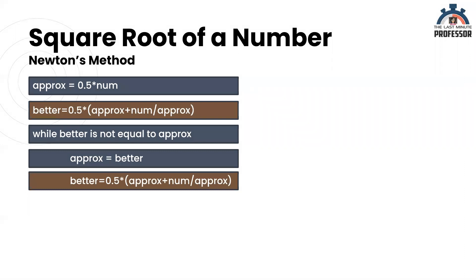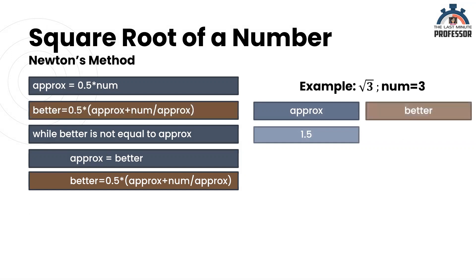Let us see the working with an example to find square root of 3. Approximately, let us assume the square root of 3 is half the number. So approx is equal to 1.5. Find better value using the formula. So we get it as 1.75. Now, better is not equal to approx.